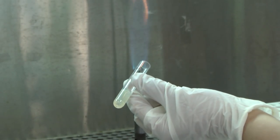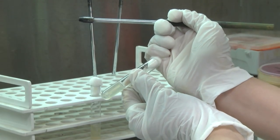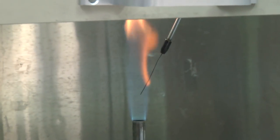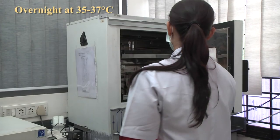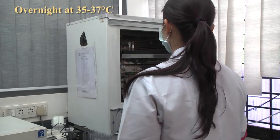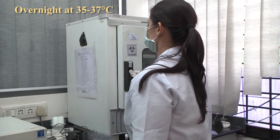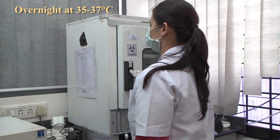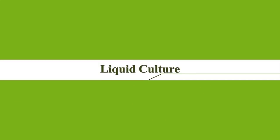Flame the mouth of the tube again and replace the plug or cap. Sterilize the wire after the inoculation. Incubate the agar medium upright at 35 to 37 degrees centigrade overnight. Growth is indicated by turbidity of the medium along the line of inoculation.